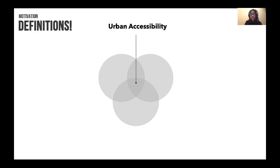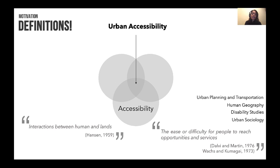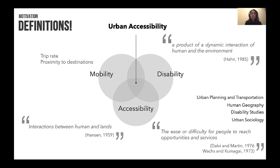Let's begin with some definitions. Urban accessibility has been studied across several different fields such as urban planning, human geography, disability studies, and urban sociology. Traditionally, accessibility has been defined as the interaction between humans and land, and more specifically as the ease or difficulty for people to reach opportunities or services. It's also strongly tied to mobility, which looks at trip rates and proximity to destinations, but neither of these look at the physical or mobility differences across people, which is where disability comes in — the product of dynamic interaction between humans and the environment.